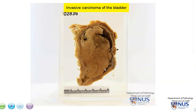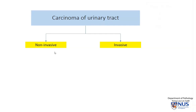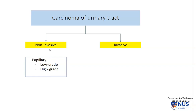The most common histologic type is urothelial carcinoma, or transitional cell carcinoma. Let's have a quick recap of carcinoma of the urinary tract — this applies to the renal pelvis all the way down to the bladder and urethra. It can be non-invasive or invasive. For non-invasive, we have papillary urothelial carcinoma, which can be low grade — with a significant risk of recurrence but overall low risk of progression to invasion — or high grade, which has a higher risk of progression to invasive carcinoma.